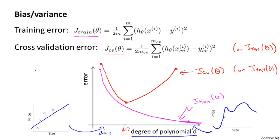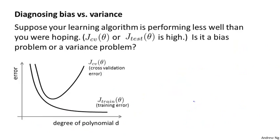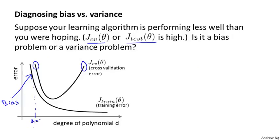Suppose you've applied a learning algorithm and it's not performing as well as you were hoping — your cross validation set error or test set error is high. How can we figure out if the learning algorithm is suffering from high bias or high variance? A high cross validation error corresponds to either the left regime or the right regime of the curve. The left regime corresponds to a high bias problem: you're fitting an overly low-order polynomial, such as d equals one, when a higher-order polynomial was needed. The right regime corresponds to a high variance problem: the degree of polynomial d is too large for the dataset you have.